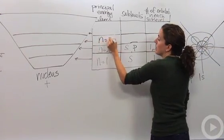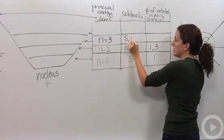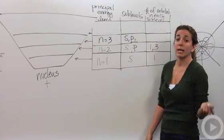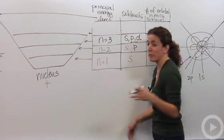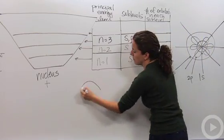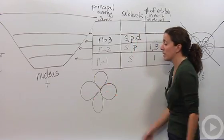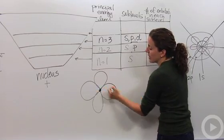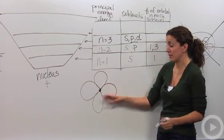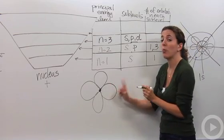In the n equals 3, it also has S orbitals, P orbitals, but it also has a D orbital. D orbitals look like flowers. It's a little more complicated. I didn't get a chance to make it in balloons because it's a little bit harder. But it looks like a clover. The nucleus is found here and the electron can be found in any four of these places. Now this is just one orbital, not four orbitals.